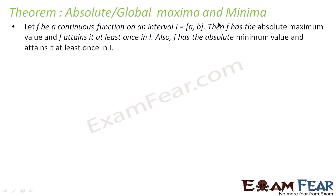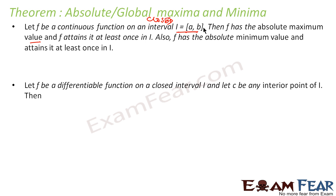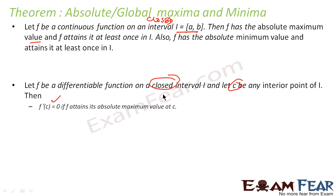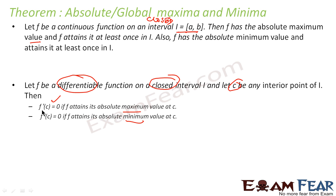There is a theorem: if f is a continuous function on a closed interval, then f will have an absolute minimum and an absolute maximum — it will attain each at least once. Also, if f is a differentiable function on a closed interval and c is any interior point, then f'(c) = 0 if it attains a local maxima or minima. If f'(c) = 0, that point is either a maxima, minima, or sometimes a point of inflection.